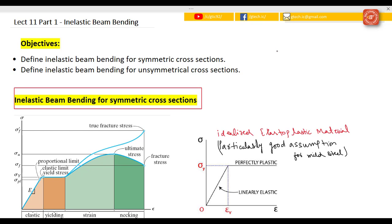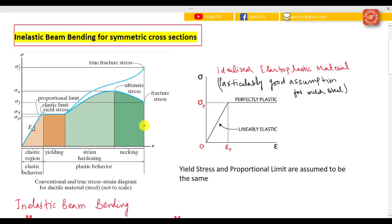Let's discuss first inelastic beam bending for symmetric cross sections. Here is our stress-strain diagram which we studied in previous video lectures related to fundamentals of mechanics of material. Now we can idealize this material as idealized elasto-plastic material, so we have a linear region and then we go completely plastic. This is a very good assumption for mild steel and it's particularly good for mild steel.